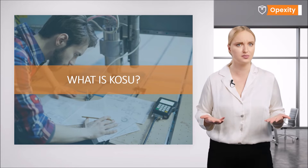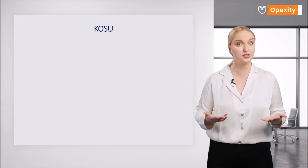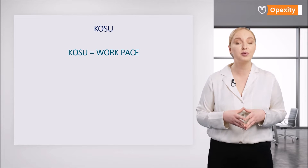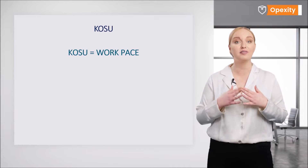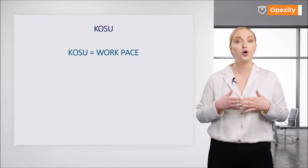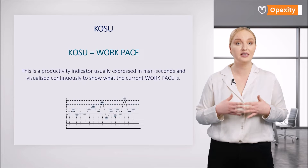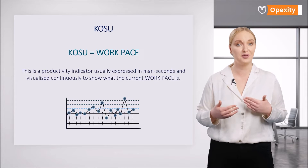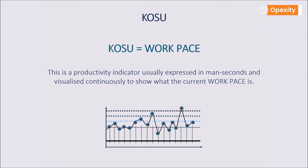What is Kosu? Kosu comes from the Japanese and means number of labor hours per unit of output. Kosu is the labor productivity indicator of a given manufacturing cell and takes into consideration the quantity of units of production produced in a given production time and the number of employees used for this purpose.